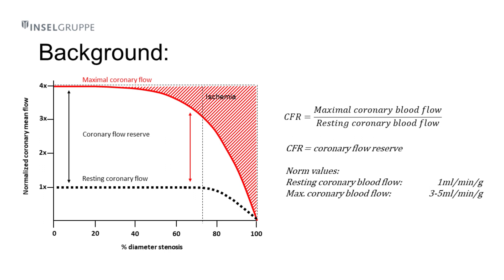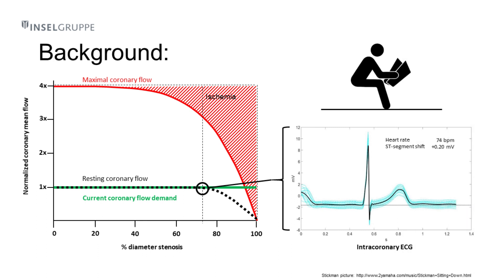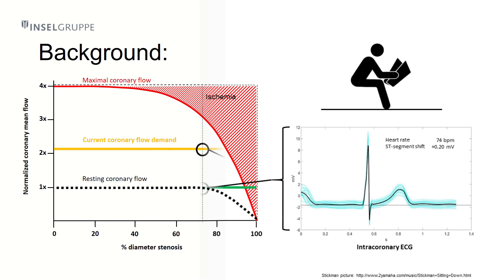Intracoronary ECG can directly reflect the amount of ischemia. This is demonstrated with an example from our study. In this patient with a hemodynamically significant coronary lesion, intracoronary ECG recorded at the beginning showing no relevant ST segment shift.